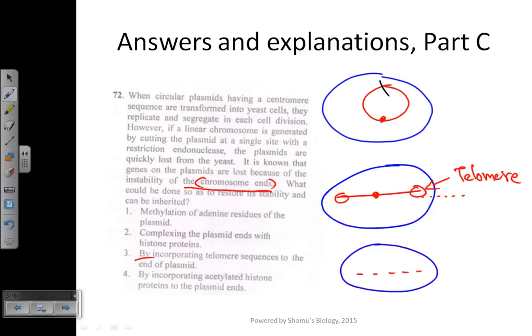The fourth option is incorporating acetylated histone proteins to the plasmid ends. Acetylated histone proteins will never be in direct contact with the DNA because when you acetylate histones, they are actually released from the DNA. So this option is not true.